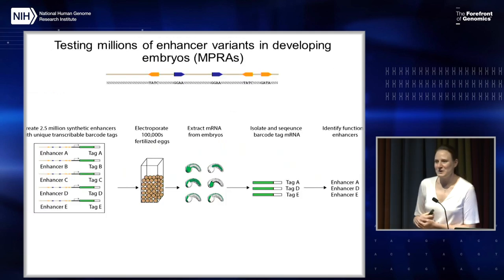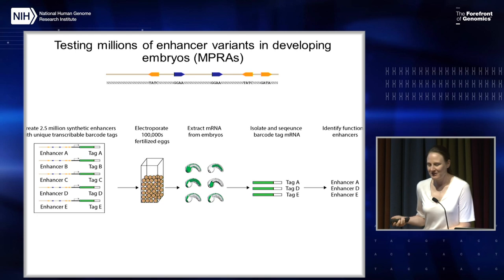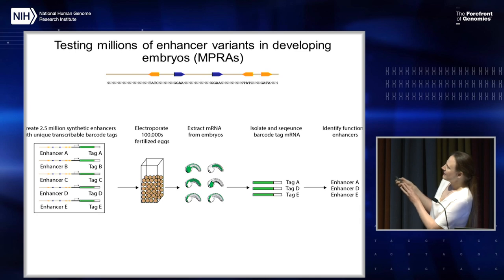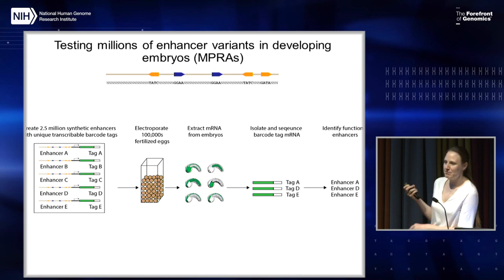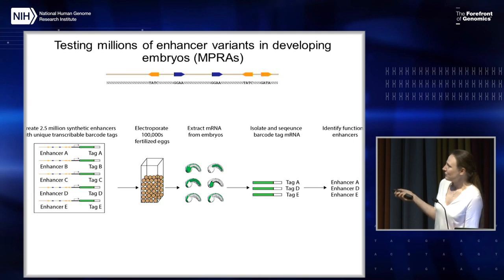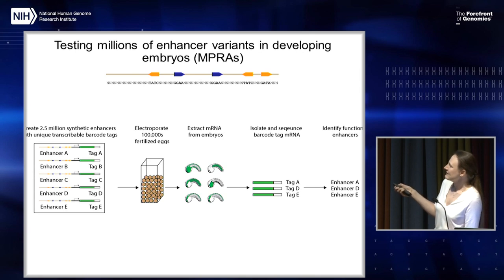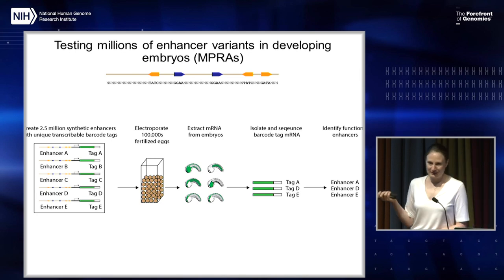My approach has been to make enhancer variants to look at sequence constraints and grammatical constraints — to see how changes in these affect gene expression in whole developing embryos. In the first experiment, I was able to make two and a half million different enhancer variants with randomized sequence outside the core. Each enhancer is attached to a promoter, GFP, and a barcode — so if enhancer A is active, we will see barcode A as mRNA. We electroporate these into fertilized eggs, wait till the normal time the enhancer is active, extract all the mRNA, and specifically sequence the barcodes. Because we know which enhancer goes with which barcode, we can identify the functional enhancers.